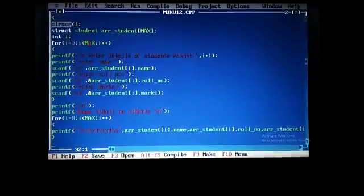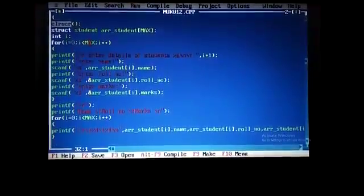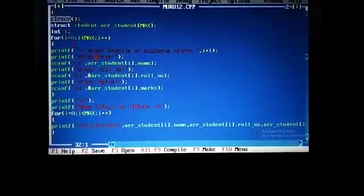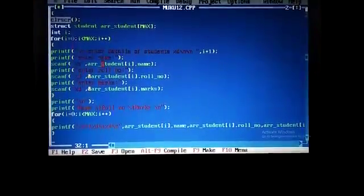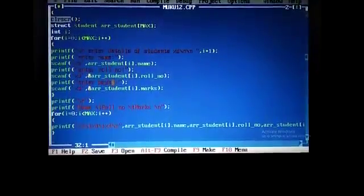We use a for loop to print the detail of student one by one. The limit of for loop is 0 to max. First, we enter the name of the student, then we enter the roll number of the student, then we enter the marks of the student.